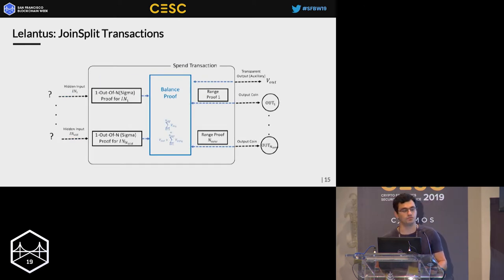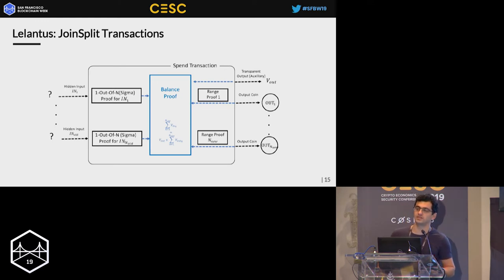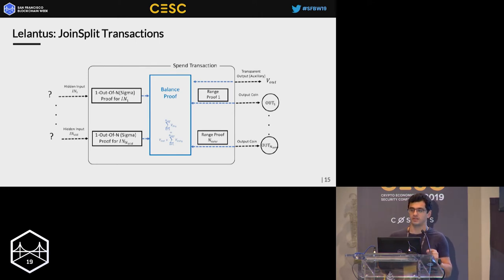The second type, joint split, enables merging, splitting, and redeeming coins of arbitrary values without revealing the origins of inputs, while ensuring confidentiality of both input and output coins. We can make anonymous spends using one out of many proofs. Interestingly, these proofs already contain all the necessary information required to generate a balance proof, showing that transaction outputs sum up with inputs without revealing input origins.